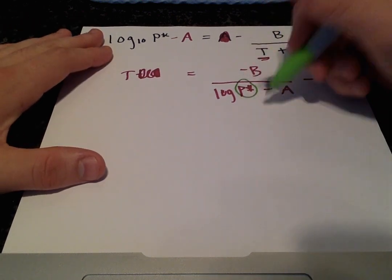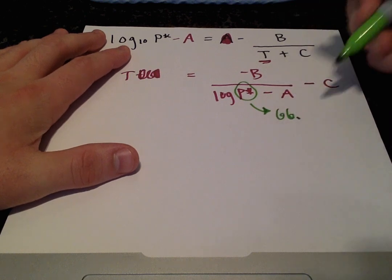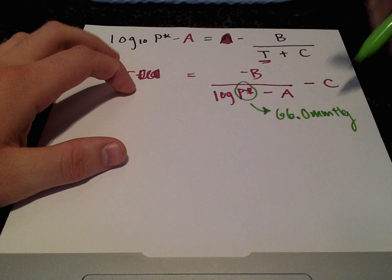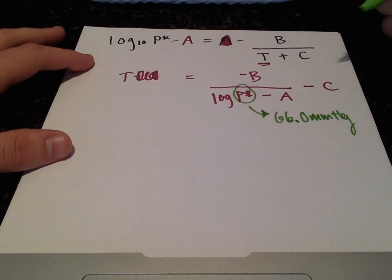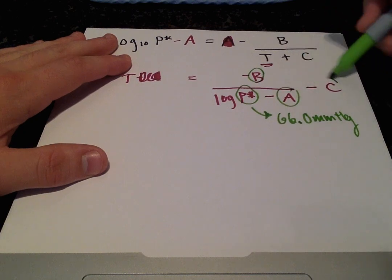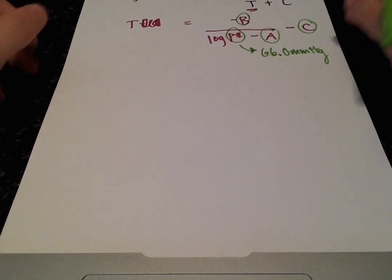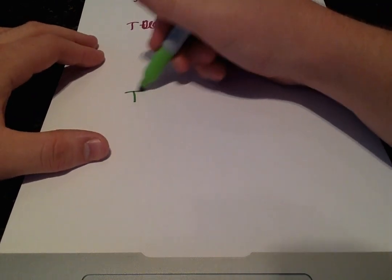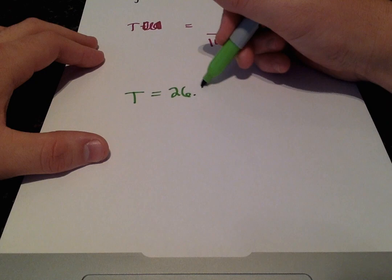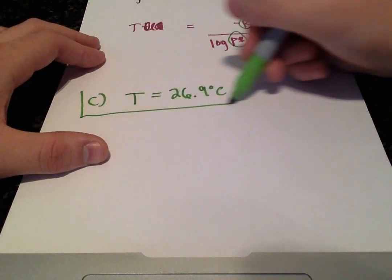So now we've solved for temperature in terms of vapor pressure, and they're giving us vapor pressure of 66.0 millimeters of mercury, and we just want to find the temperature that correlates to that. And it looks to me like we have all our values. We have our vapor pressure and our constants A, B, and C. And once we substitute those values, we'll get that the temperature is 26.9 degrees Celsius for part C.